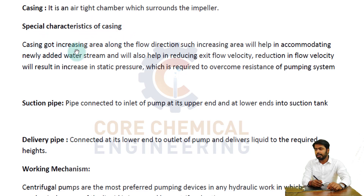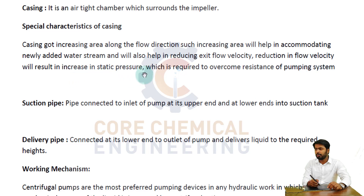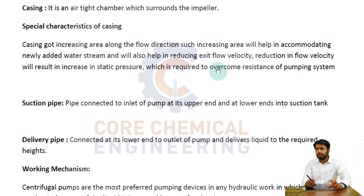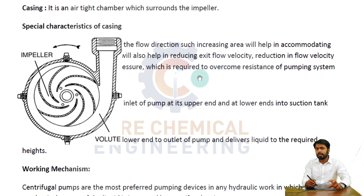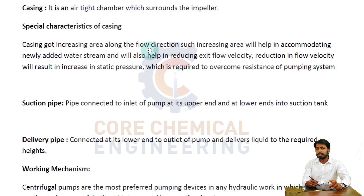Now casing — it is an airtight chamber which surrounds the impeller. The casing has an increasing area along the flow direction. Such increasing area helps in accumulating the newly added water stream and also helps in reducing exit flow velocity. Because as the area increases, velocity decreases and pressure increases. So reduction in flow velocity results in increase in static pressure, which is required to overcome resistance of the pumping system. The casing has a volute shape with an increasing cross-sectional area as fluid moves toward the discharge.